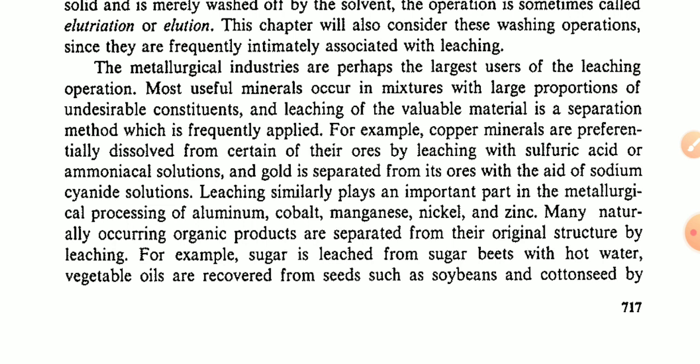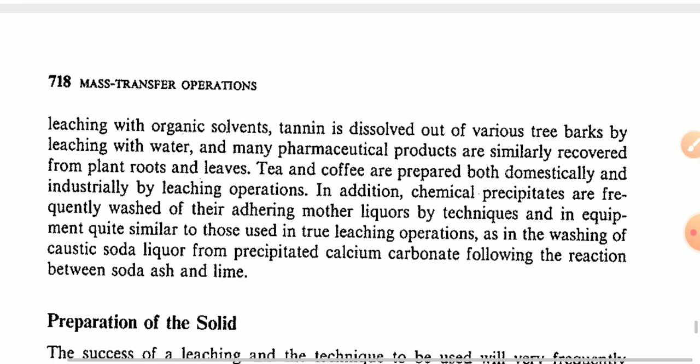Leaching similarly plays an important part in the metallurgical processing of aluminium, cobalt, manganese, nickel, and zinc. Many naturally occurring organic products are separated from their original structure by leaching. For example, sugar is leached from sugar beets with hot water; vegetable oils are recovered from seeds such as soybeans on a continuous basis. Tannin is dissolved out of various tree barks by leaching with water, and many pharmaceutical products